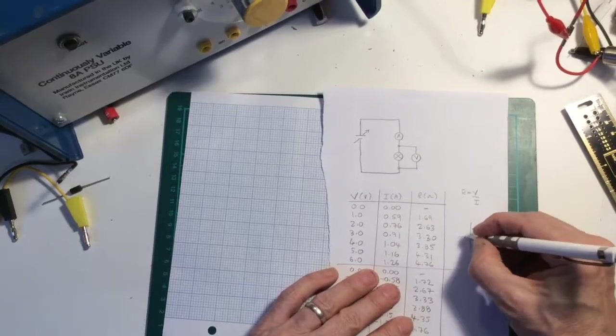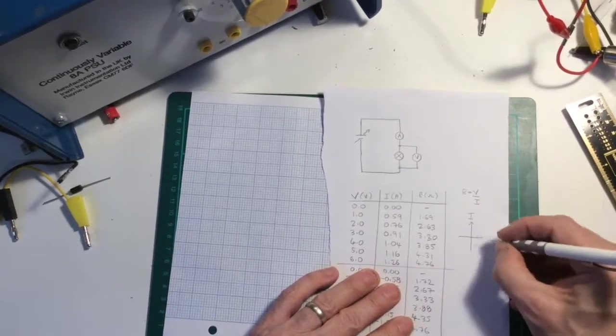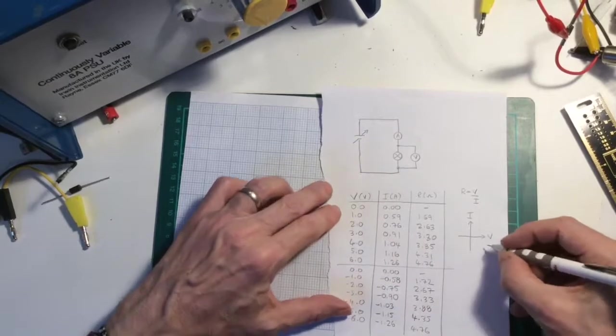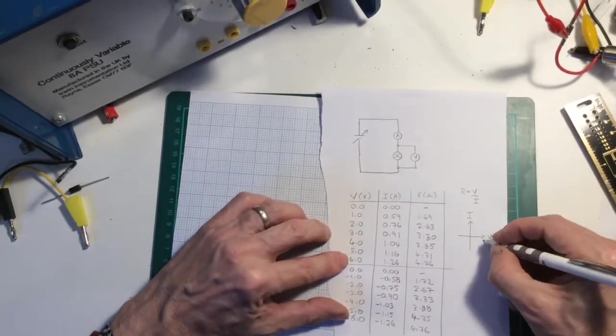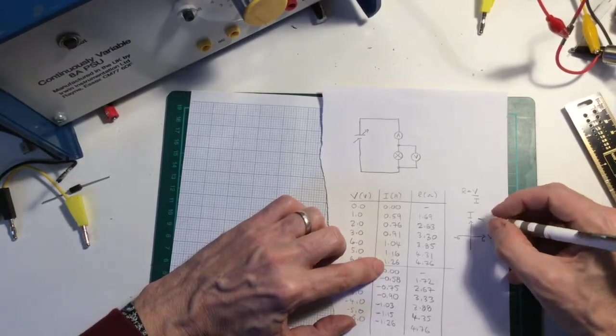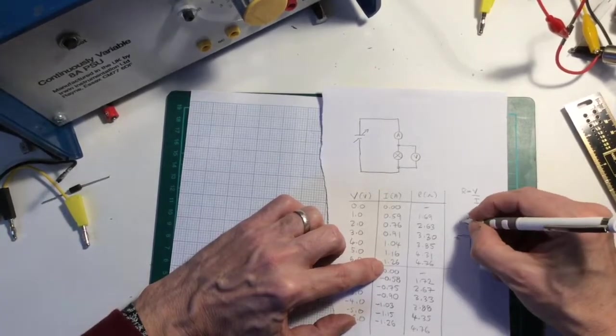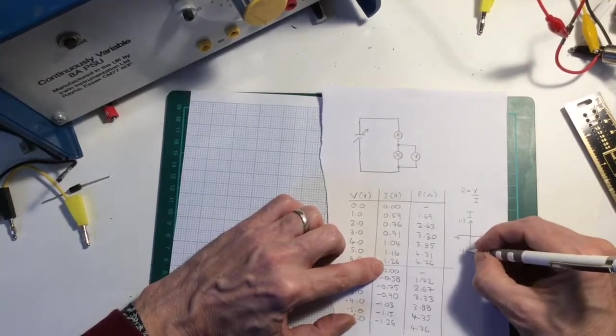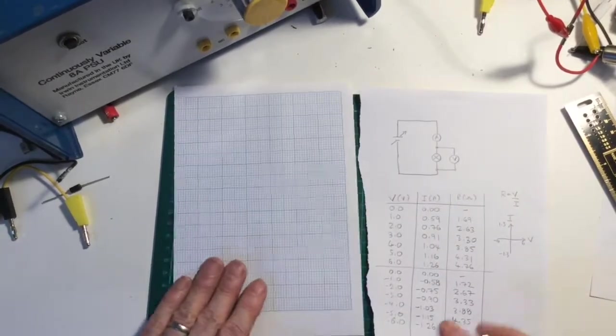So my axes have to be like this: current, potential difference. And this has to go from zero in the middle to six and minus six. And the current has to go from 1.26, so 1.3 down to minus 1.3. So I have to fit that onto the graph.